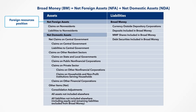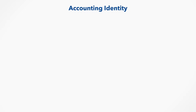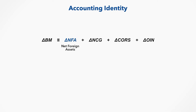The Depository Corporation Survey, or DCS, provides a principal set of monetary statistics for monetary policy. It facilitates the analysis of broad money and its components and counterpart sources, credit and debt aggregates and their components, foreign assets and liabilities, and other liabilities of the depository corporation sector. The DCS is constructed around the accounting identity: changes in broad money is equal to the sum of changes in net foreign assets (NFA), net claims on central government (NCG), claims on other resident sector (CORS), and other items net (OIN).